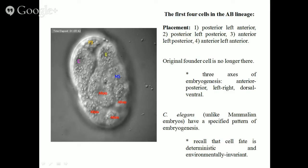It's important to remember that C. elegans has a specified pattern of embryogenesis — a deterministic system of development — unlike mammalian embryos like humans, cows, or mice, where embryogenesis is much more of a stochastic process. That's why researchers study this in C. elegans: because you can't really do it in mammals. Although, as we'll see, there are certain things we can learn from vertebrates and apply to C. elegans.